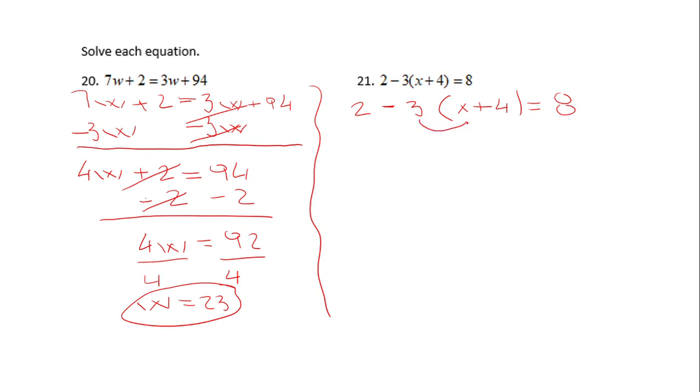Let's eliminate the parenthesis. If you remember how we eliminate the parenthesis, by doing the distributive property. We have 2 minus 3 times x is 3x, and 3 times 4 is 12. Now here be careful - this is a negative sign here, or subtraction. This is a positive sign or addition. When you combine a negative and a positive, you get a negative equals 8.